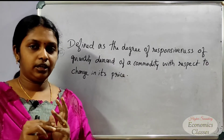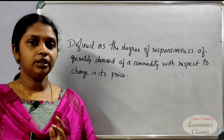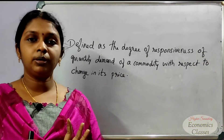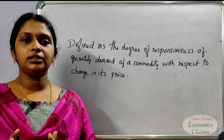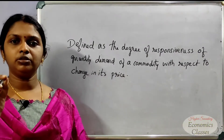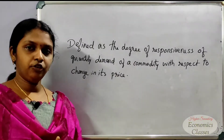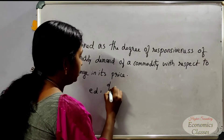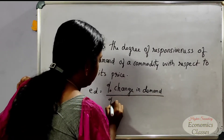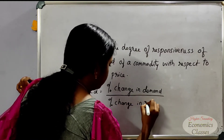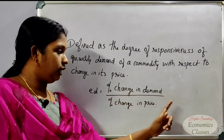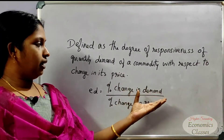There are five types of elasticity of demand: elastic demand, inelastic demand, unitary elastic demand, perfectly elastic demand, and perfectly inelastic demand. The equation for price elasticity of demand is: percentage change in quantity demanded divided by percentage change in price.